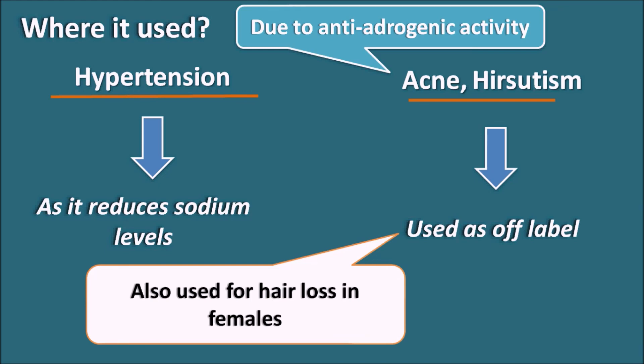In summary, spironolactone is a potassium-sparing diuretic that acts as a competitive antagonist for aldosterone receptors. By inhibiting aldosterone action, it decreases the number of sodium channels expressed on the epithelial membrane of the collecting tubules, thereby inhibiting sodium reabsorption and retaining potassium within the body. Please subscribe to our channel and post your comments in the comment box. Thank you for watching.